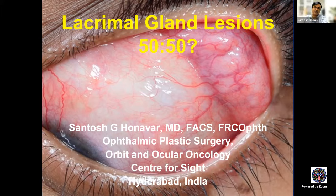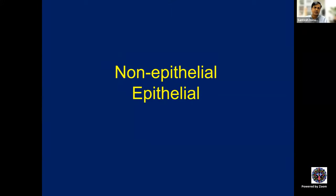It's not just tumors — we can reword it as lesions. Lesions include tumors, non-tumorous conditions, everything. So this is 50% of lacrimal gland masses or lesions supposed to be non-epithelial and 50% epithelial. Currently, with available data, we know it does not conform to 50-50 — it is actually 70-30 or 60-40 or 65-35, depending on the region from which it is reported.